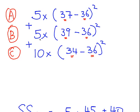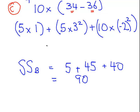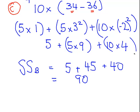So this is a bit of number crunching. So that is 5 times 37 minus 36 squared is 1. Well, 1 squared, but 1. Plus 5 times 39 minus 36 squared. That's 3 squared. And that is equal to—well, just write it here as 5 times 3 squared. And then 10 times 34 minus 36. That is minus 2 squared. So that is 5 plus 5 times 9 plus 10 times 4. And we have 5 plus 45 plus 40. And that is equal to 90. So the between group sums of squares is 90.